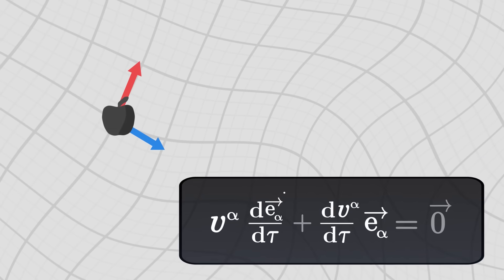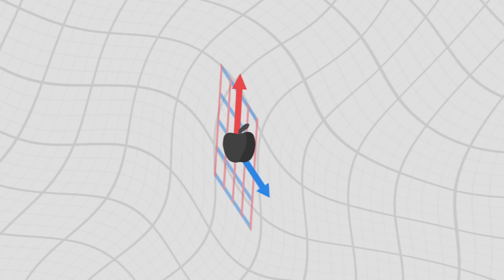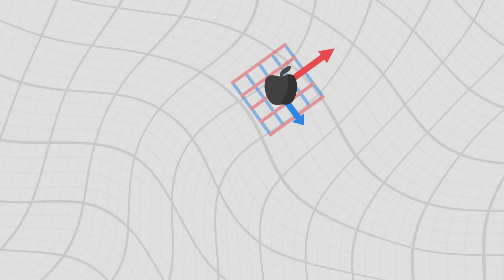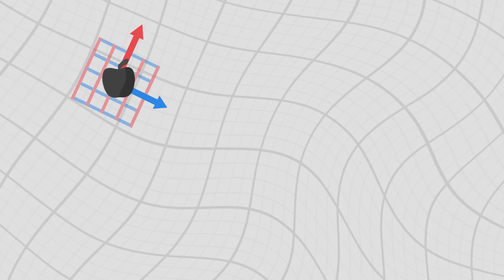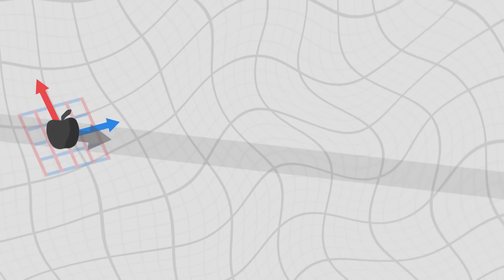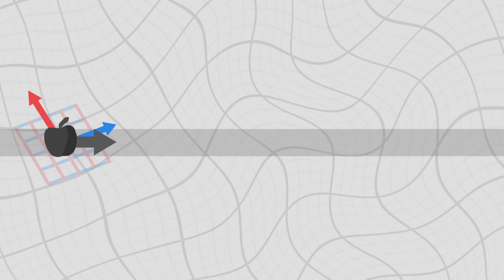The basis vectors can indeed vary throughout the trajectory, because the grid that we choose as our coordinate system can very well be irregular. Although the vector remains the same as a geometric object, its components on the grid can vary as the apple moves.